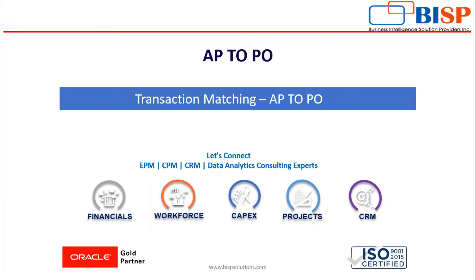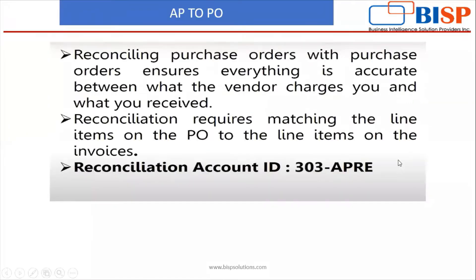I will give you a brief explanation. It is actually accounts payable to purchase order requisitions. Under this reconciliation, transactions or the invoice IDs along with the line items, line amounts and the invoice amounts are actually matched up to ensure that everything is accurate — what the vendor has charged and what we have paid for and what we will have to pay for in the future.